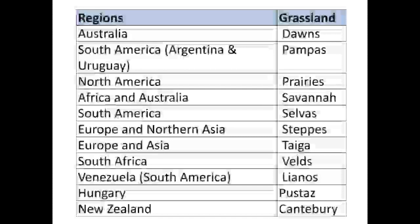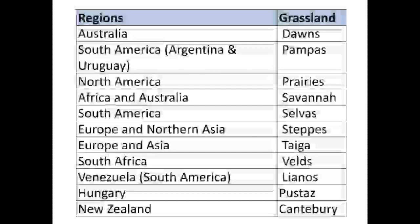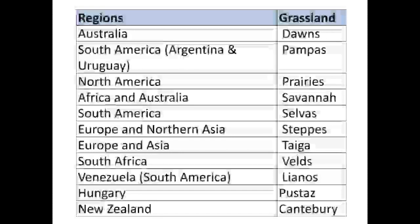In South Africa, the grasslands are called Veld. The grasslands in Hungary are called Pustas. In New Zealand, the grasslands are known as Canterbury. Please remember this table, as direct questions are asked from Australia, South America, North America, Africa, and New Zealand.